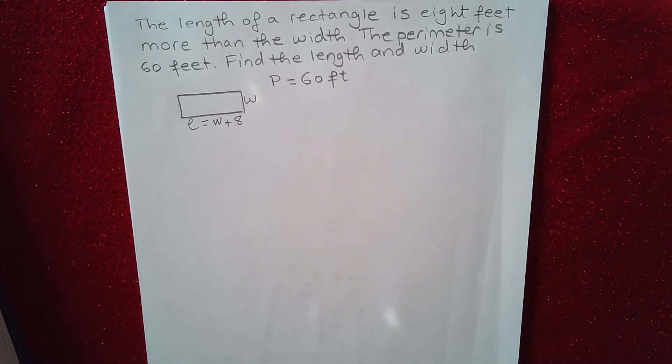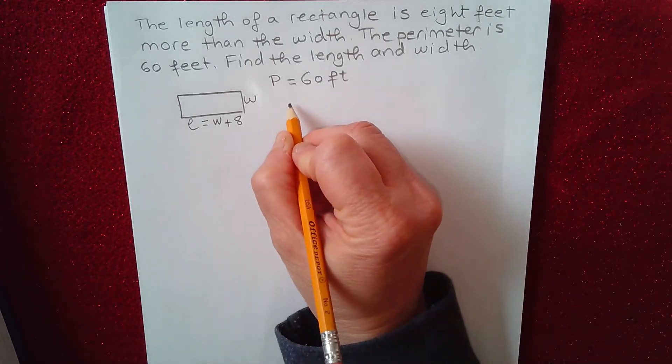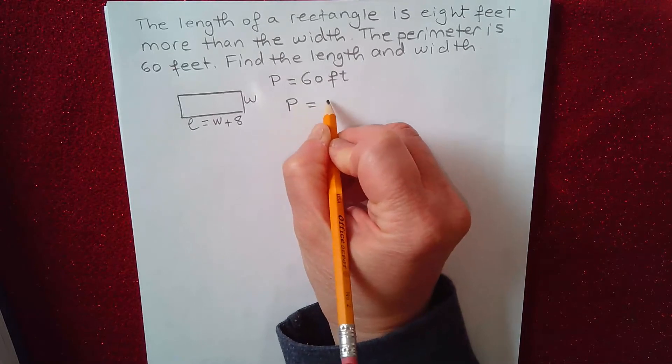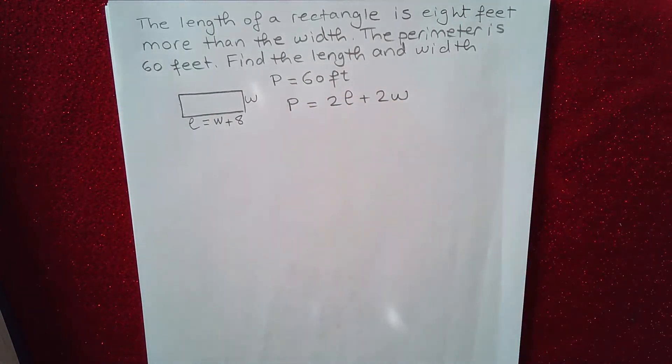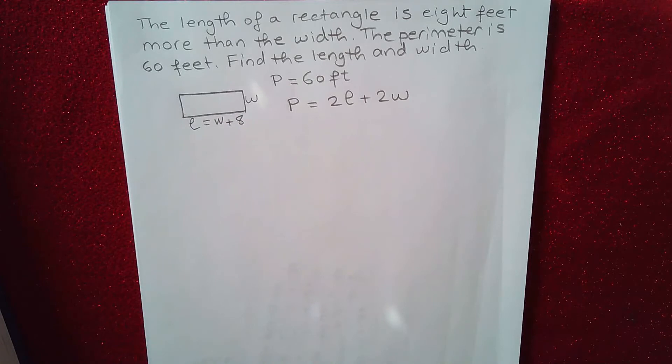Okay. So now we can go ahead and find the length and the width of the rectangle using the equation: perimeter equals 2L plus 2W. Right. So that is the equation for the perimeter of a rectangle.